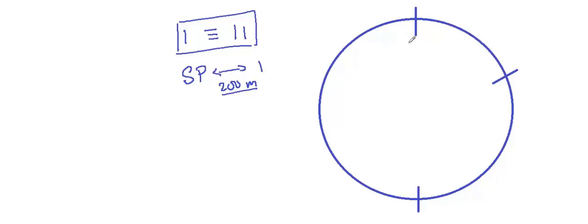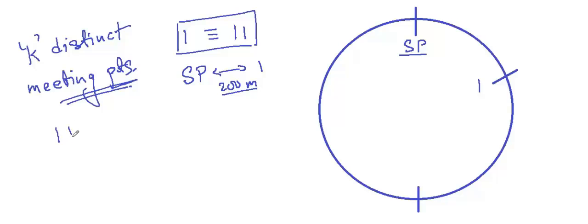I hope everybody is aware of the relationship between distinct meeting points. Suppose they meet at a particular point. Let's say they meet the first time here and there are a total of k distinct meeting points on the track. So every kth meeting after the first meeting, they will again meet at this particular point. So we can say that 1 plus nk, some n number of k meetings, they should be meeting at this particular point provided that there are k distinct meeting points.